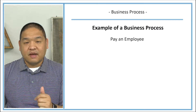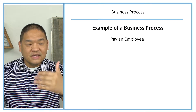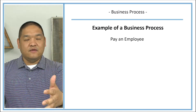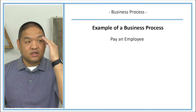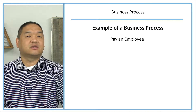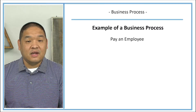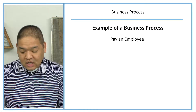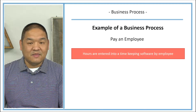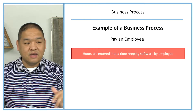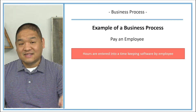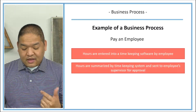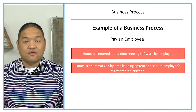Let's give an example of a business process: paying an employee. As an employee, you might think you just turn in your hours and get a check — but it's more complicated than that. The first step is that all hours are entered into a timekeeping software by the employee. You clock in and clock out, and that time is summarized and sent to HR or payroll to cut you a check at the end of the pay period. Then the hours are sent to the employee's supervisor for approval.